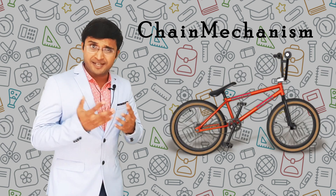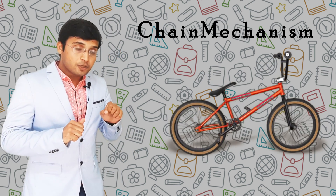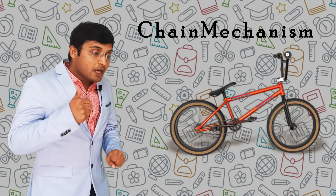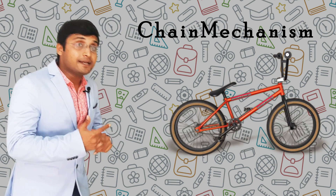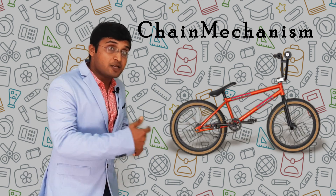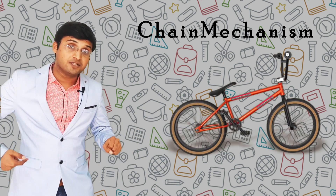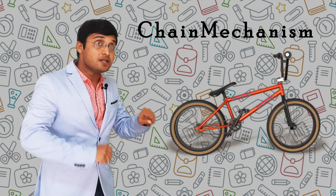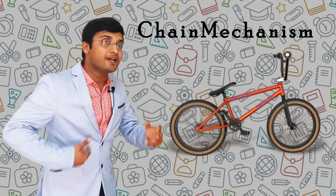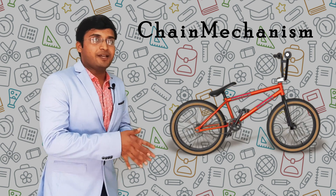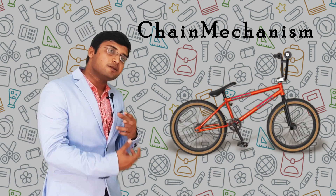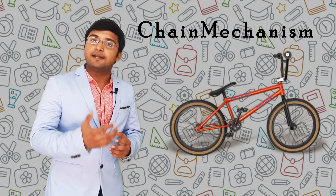For example, consider a bicycle. On the pedal you apply force — that is the input force. The output is the rotation of the wheels. That input force travels through the chain to the wheels, making the wheels rotate. So the input force is the force of our leg, and the output is the rotation of the wheel. This is called a chain mechanism, used in a cycle. Any device with some input force and a desired output force and movement is called a mechanism.